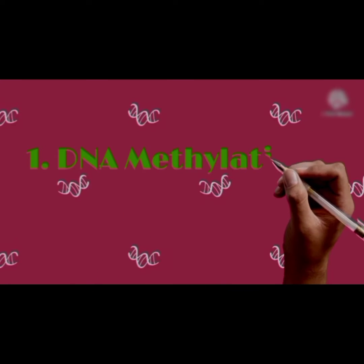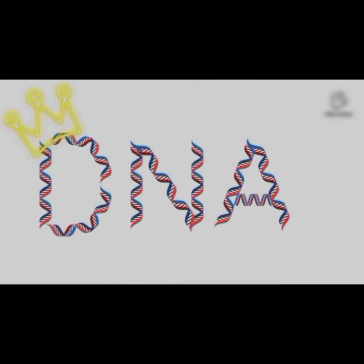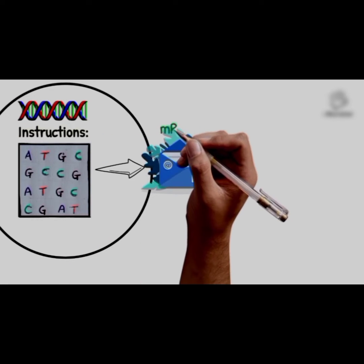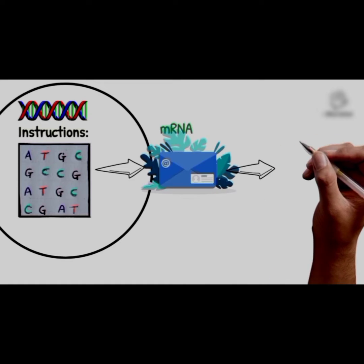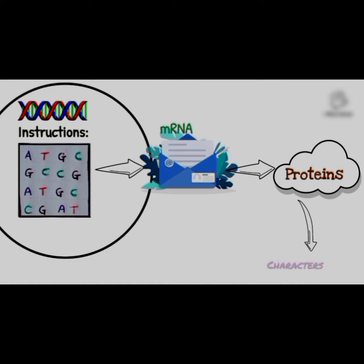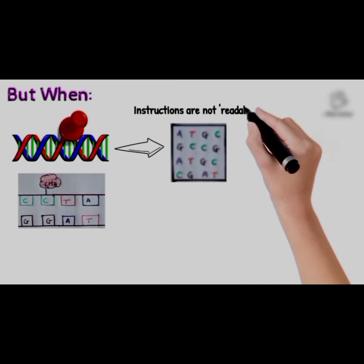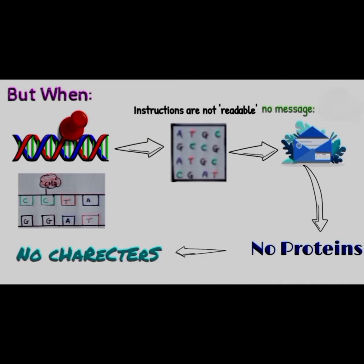They play majorly in two ways. First: DNA methylation. DNA is a master molecule — it has instructions and it sends messages to form proteins. A character like the color of skin is expressed. But when a molecule like methyl binds to DNA, it can't send its message and the character becomes unexpressed.